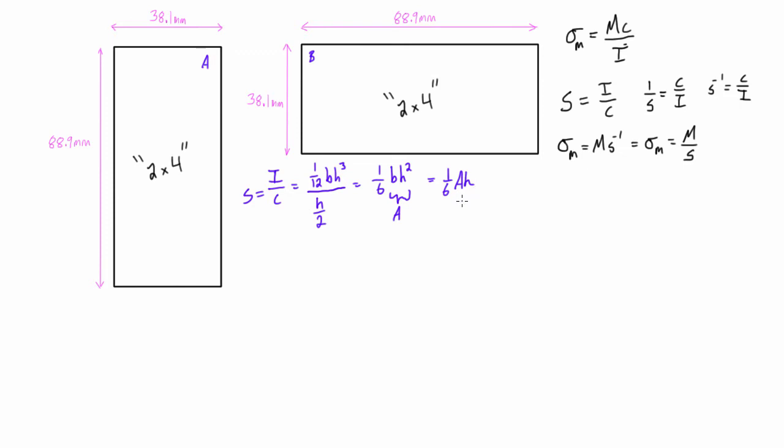So what we're seeing here is no matter which way we orient this 2 by 4, whether it's orientation A, where the tall side is up, or orientation B, where the tall side is side-to-side. We can see that the cross sectional area won't change. Actually, we can just write that in.